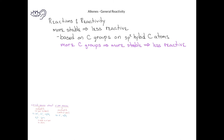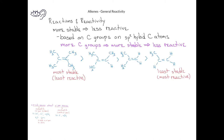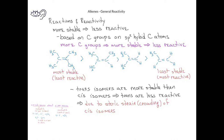Generally, the more stable alkenes will be those that have more carbon groups bonded to the sp2 hybrid carbons. So an alkene that has four carbon groups on the two sp2 hybrid carbons will be much more stable and less reactive than an alkene that has only one carbon group on the sp2 carbons of the double bond. That kind of alkene, with only one carbon group on one sp2 carbon, will be least stable and therefore most reactive. Another general trend we observe with alkenes is that trans isomers are more stable than cis isomers due to reduced steric strain. Therefore, trans isomers will be less reactive than cis isomers.